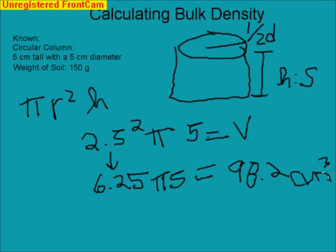Now, we know that bulk density is always going to be measured for our purposes in grams per cubic centimeter. So we know our cubic centimeters, and we know our grams.